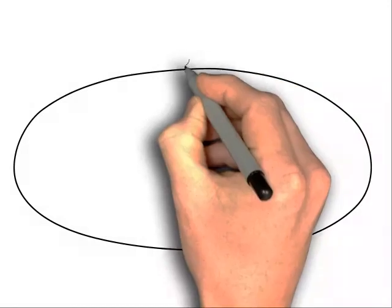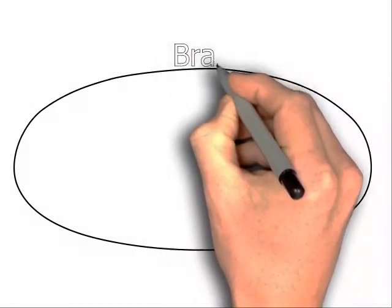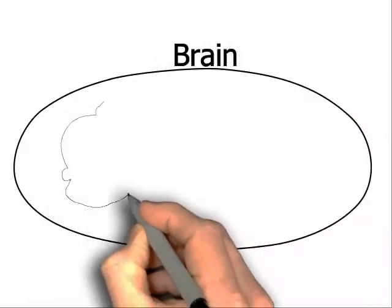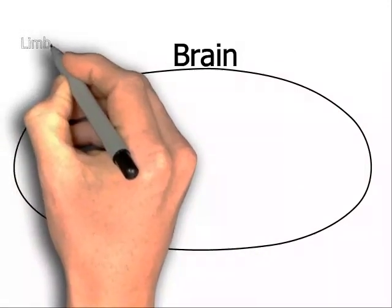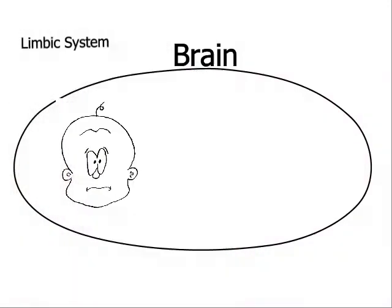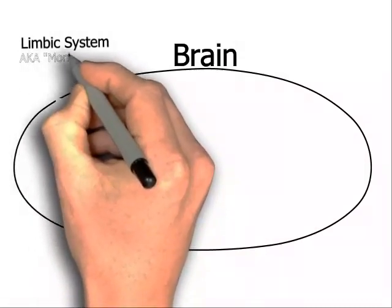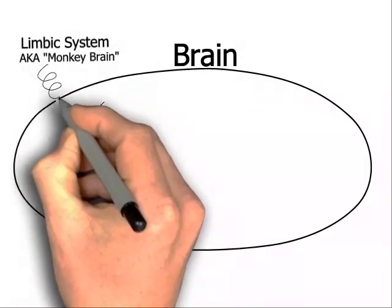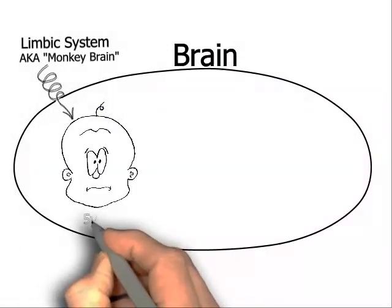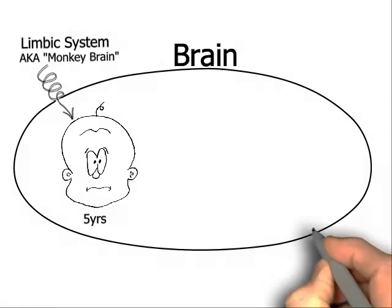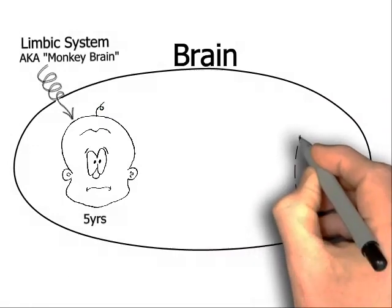Now, inside the brain is a set of primitive structures called the limbic system, L-I-M-B-I-C. Fight or flight, anger, fear. It's the part of the brain we share with other animals, so it's all about survival, and all emotions come from the limbic system. I call it the monkey brain, and it's completely wired up by the time you're five years of age. So it's like a hurt, fearful, angry little five-year-old in your head.